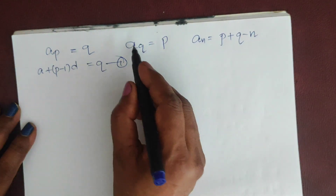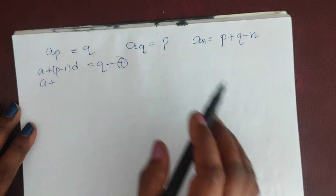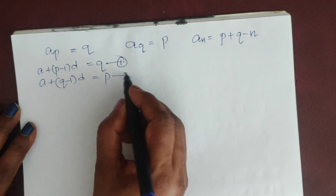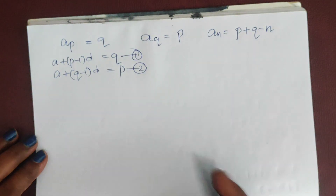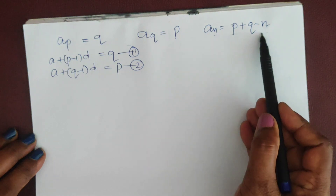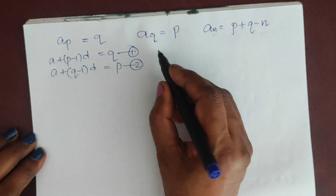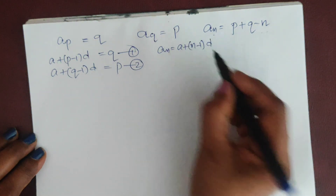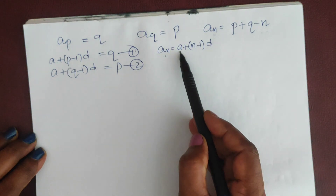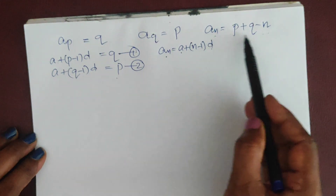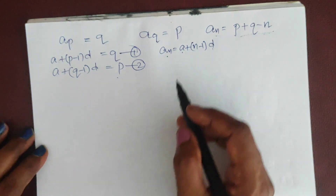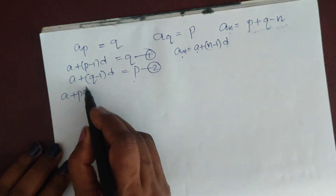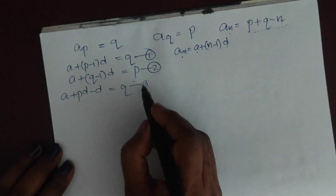Similarly, the qth term: a + (q - 1)d = p. That is equation number 2. Expanding equation 1: a + pd - d = q, which is equation 3. And a + qd - d = p, which is equation 4.